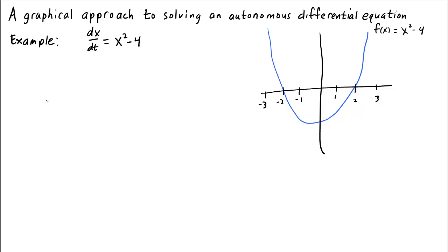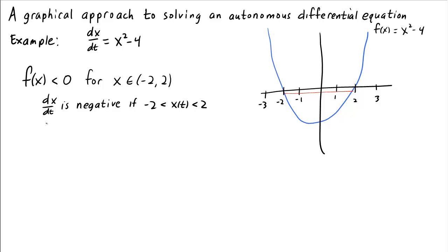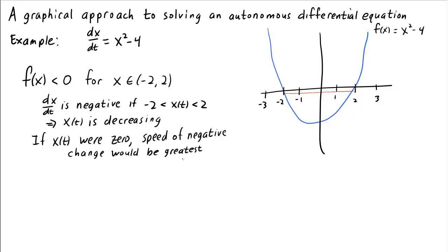By looking at the graph of f, we can immediately make some observations. First of all, f of x is negative in the interval from negative 2 to 2. So for x in that interval, the rate of change dx/dt must be negative, which implies that x of t is decreasing. In fact, if x of t happened to be 0, the speed of this negative change would be greatest, because the minimum of the function occurs at x equals 0.